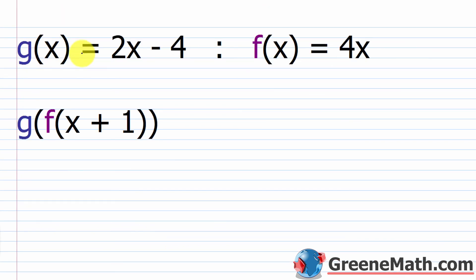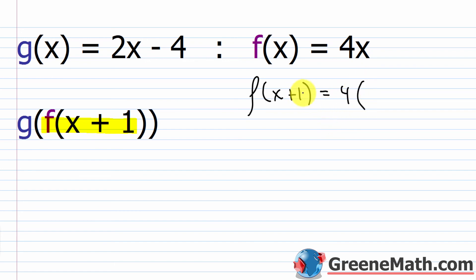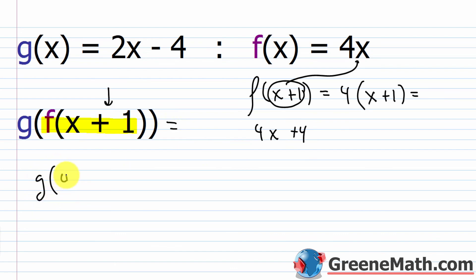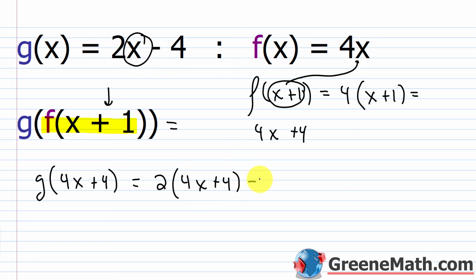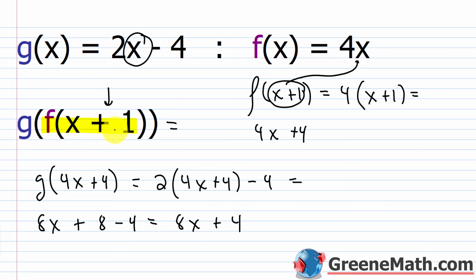Next: g of x equals 2x minus 4, f of x equals 4x. We want g of f of x plus 1. Start with f of x plus 1: this is 4 times the quantity x plus 1, which gives 4x plus 4. Now this becomes g of 4x plus 4: 2 times the quantity 4x plus 4, then minus 4. Using the distributive property: 2 times 4x is 8x, plus 2 times 4 is 8, then minus 4. So 8x and 8 minus 4 is 4. Therefore g of f of x plus 1 equals 8x plus 4.